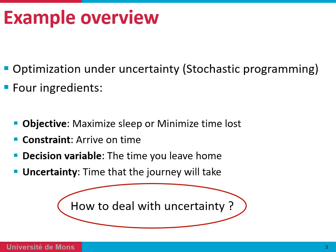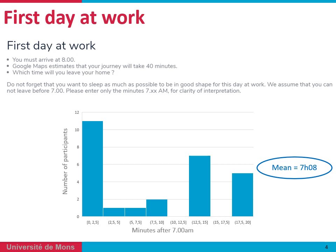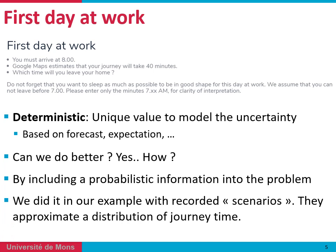The question is how to deal with this uncertainty. Let's assume it's the first day we have to go to work — the very natural behavior is to check the time on Google Maps. Let's assume it will take 40 minutes and you have to decide what time to leave home. From the results of the poll, some of you decided to go at 7:20, but others decided to go even earlier because they thought Google Maps was not a good forecast. We took a decision based on a unique value of uncertainty — a single value forecast — and this is usually called the deterministic point of view.